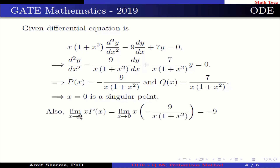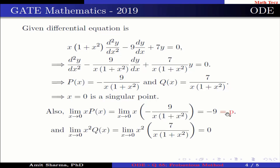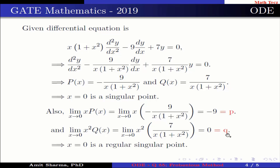Also, lim(x → 0) x·p(x) = −9, which is the value of p, and lim(x → 0) x²·q(x) = 0, which is the value of q. This implies x = 0 is a regular singular point.